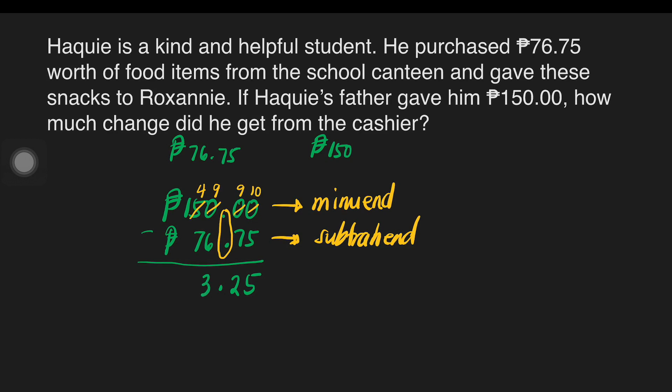9 minus 6 is equal to 3. 4 minus 7 — you cannot do that. So we will borrow from the 1, making it 0, and this will become 14. 14 minus 7 is equal to 7. Then 0 — no need to bring it down because it has no value at all. So our answer is 73 pesos and 25 centavos. And we call this our difference.